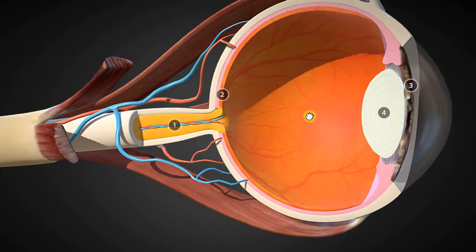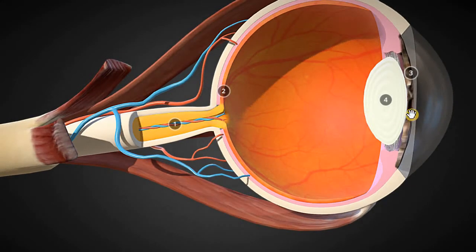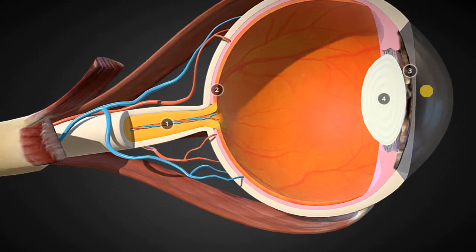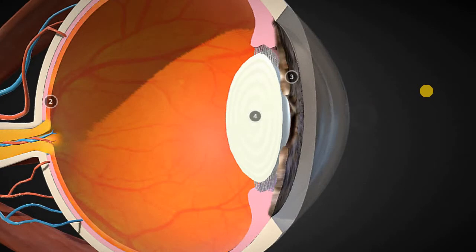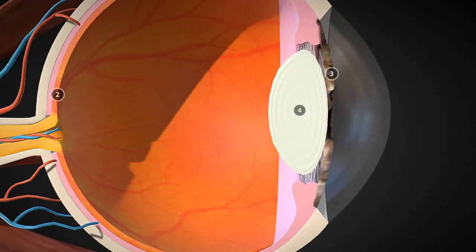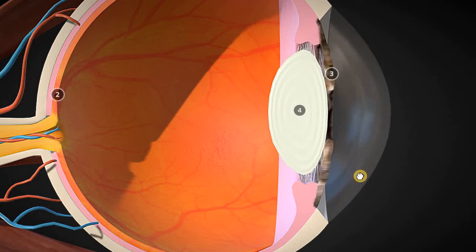Looking at it from this angle, you have the cornea in the front here. Let's zoom in a bit so you can see it. This front part would be the cornea — you can kind of picture it like the way a contact lens would stick on the eye; that's in a way what the cornea would behave like.